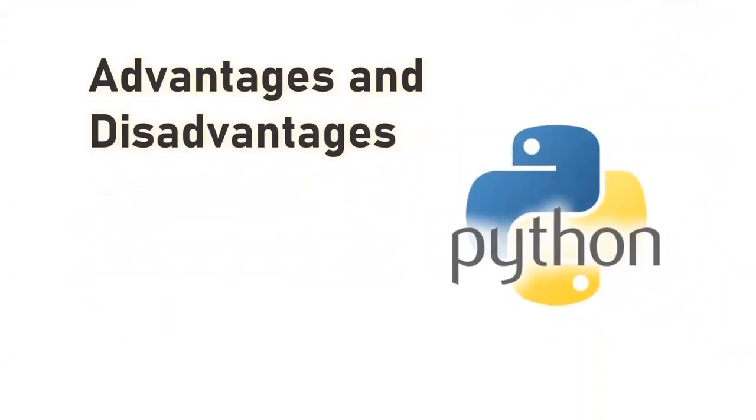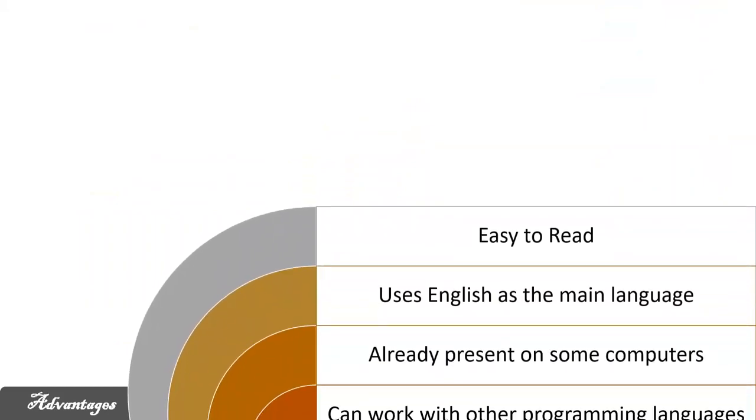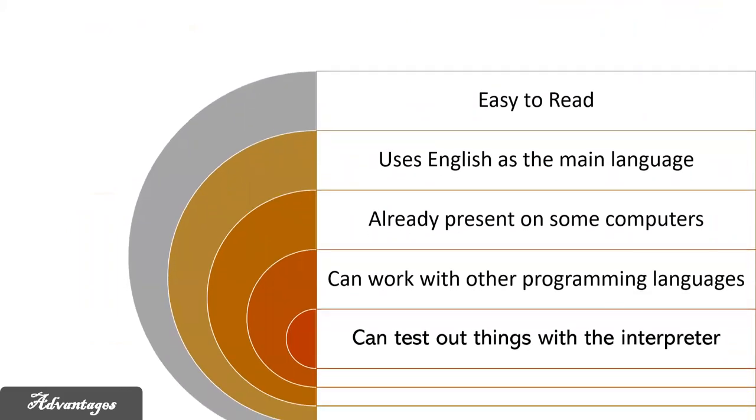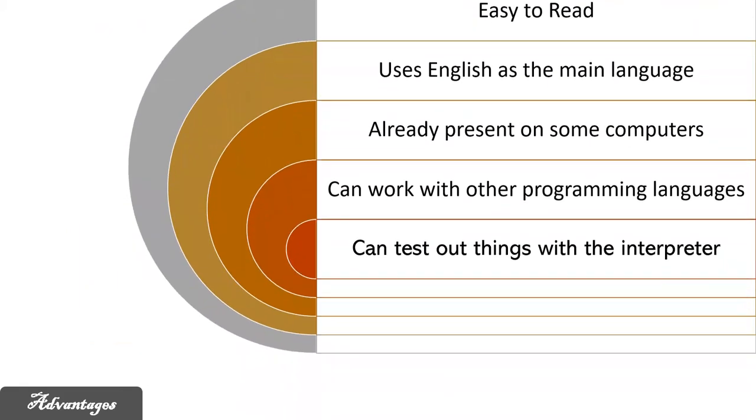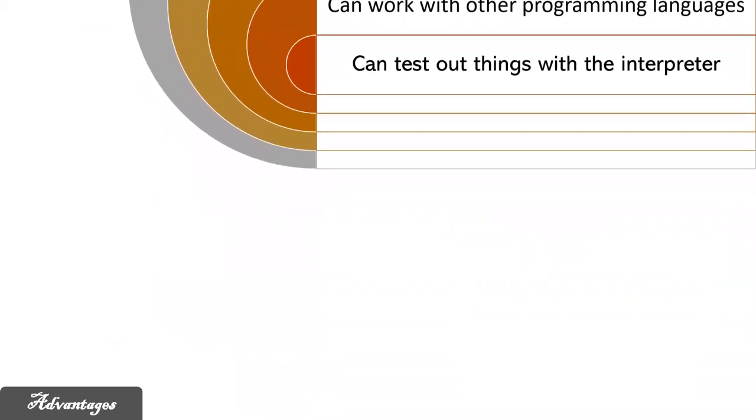Let's move on to the advantages and disadvantages of Python programming. Advantages: Python programming is easy to read, it uses English as the main language, it is already present in some computers, it can work with other programming languages, and can test out things with the interpreter.